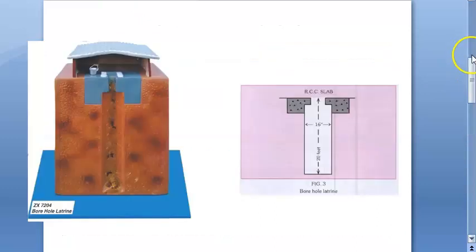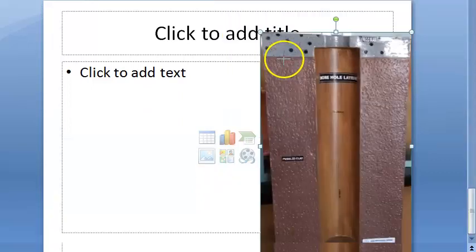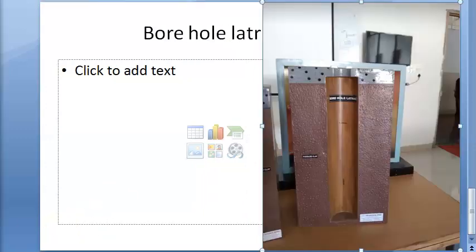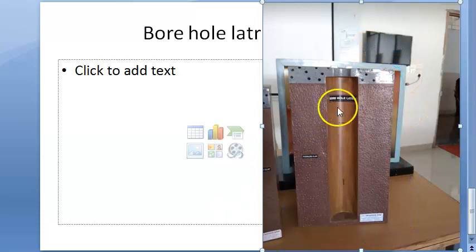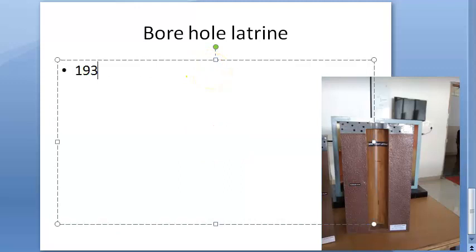The borehole latrine is important in our country and is considered the forerunner for non-service type latrines. It was first introduced in 1930 by the Rockefeller Foundation to avoid hookworm infestation. The diagram here is a spotter model representation. As you can see from the top view, the white part is where you keep the legs. It was introduced for hookworm control.